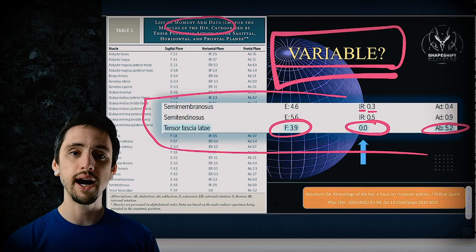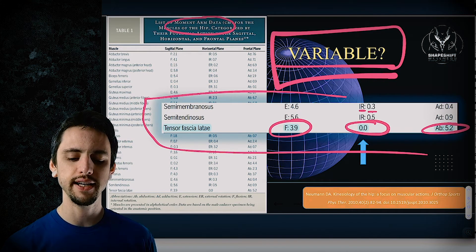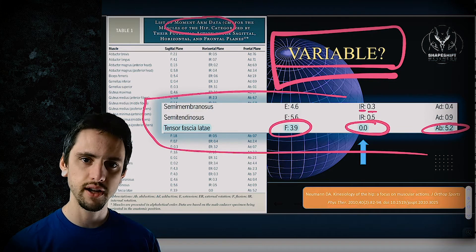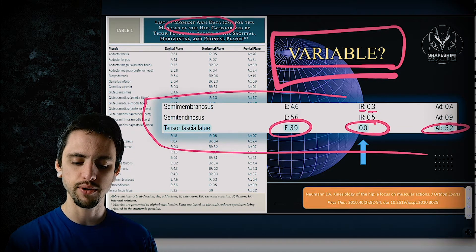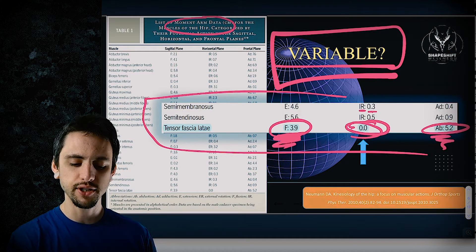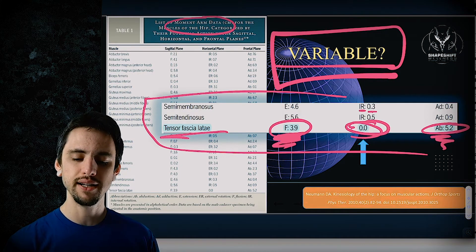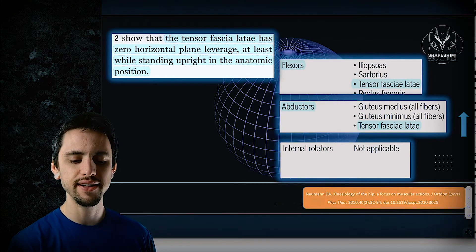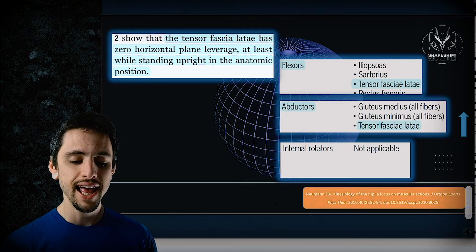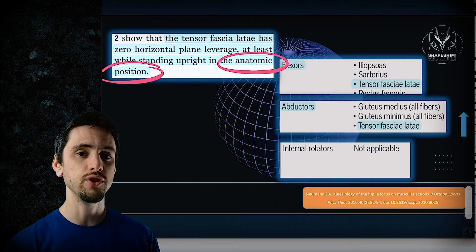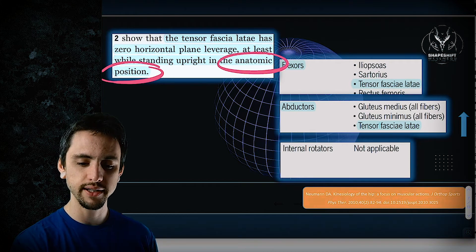Keep in mind that the human body is variable — these studies come from cadavers and a different person might have slightly different moment arms. But even if you compared hundreds of people, their moment arms for internal rotation of the TFL are going to be basically zero, while their moment arms for flexion and abduction will be much greater. Another table in the article confirms: the tensor fasciae latae has zero horizontal plane leverage while standing upright in the anatomic — that is, neutral — position. So from neutral, there's no internal rotation.